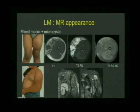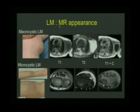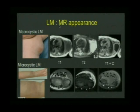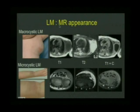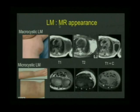On MRI, the appearance depends on whether we're looking at macrocystic or microcystic disease. In this child with a macrocyst, on T1 you can see it's hypointense, bright on T2, and the walls tend to enhance in macrocysts. Whereas in microcysts, the tissue is hypointense on T1 and diffusely hyperintense on T2, as in this child's expanded lesion in the forearm.